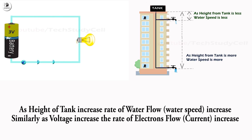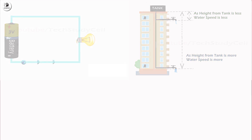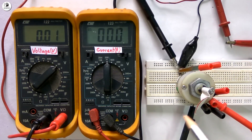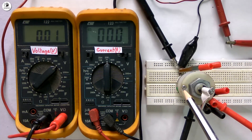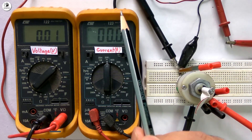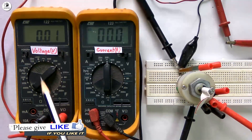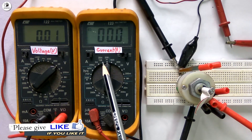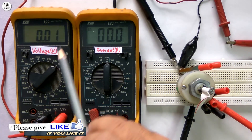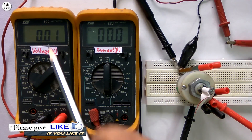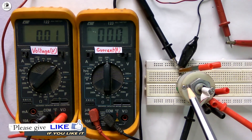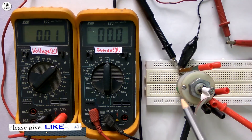Let's do a practical experiment to observe this, and then we can easily understand the book's definition of voltage and current. In this experiment, you can see I have connected a DC motor with a variable power source, and we can measure the voltage and the current with the help of these two multimeters during the experiment. Now, as I have applied no voltage across the motor, no current is flowing through it.